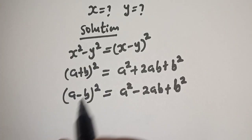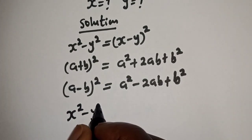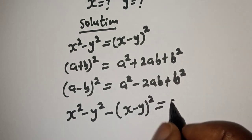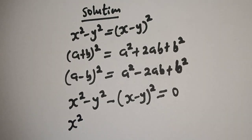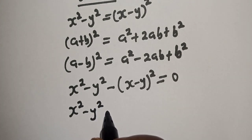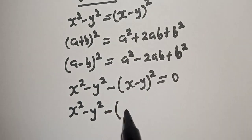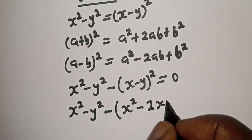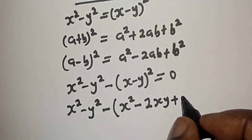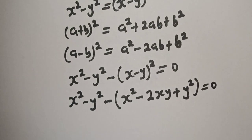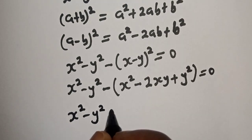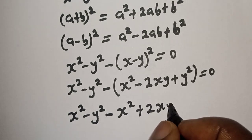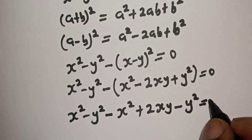From here, we have x squared minus y squared. Let's bring the right-hand side to this side, so x squared minus y squared minus the expansion equals 0. The whole of this can be written as x squared minus y squared minus (x squared minus 2xy plus y squared) is equal to 0.